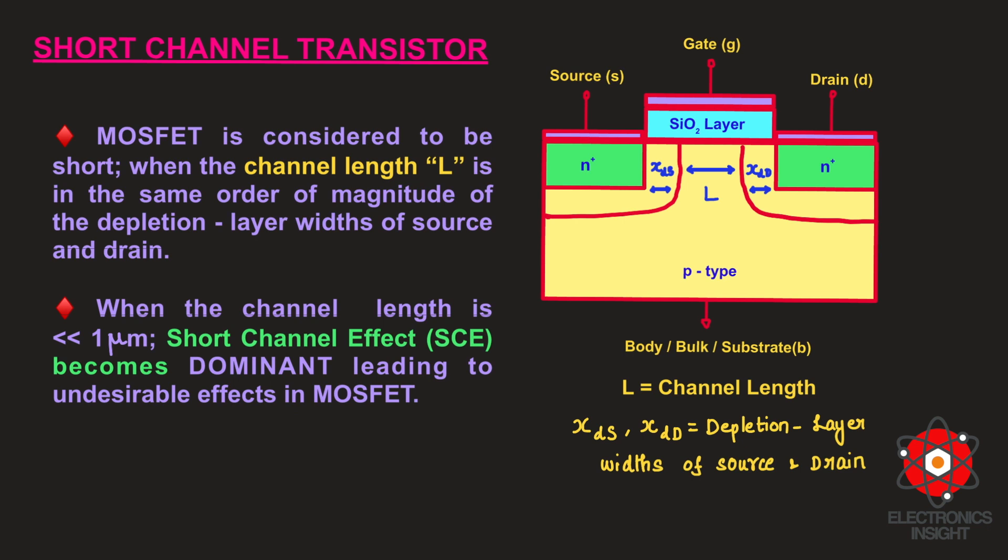We have seen this cross-sectional view of MOS transistor earlier in our videos. The same cross-sectional view we have considered here to explain the short channel transistor. MOSFET is considered to be short when the channel length L is in the same order of magnitude of the depletion layer widths of source and drain.